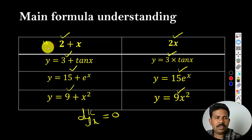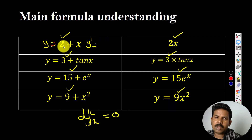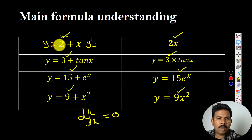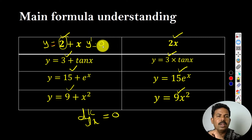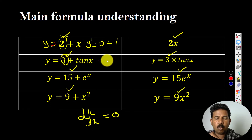This is mentioned as y is equal to the problem. y is equal to, y' is equal to — y' is equal to constant. 10 is a constant. x will become 1. y' is equal to 0. What is the derivative of tan x? It will become sec squared x.